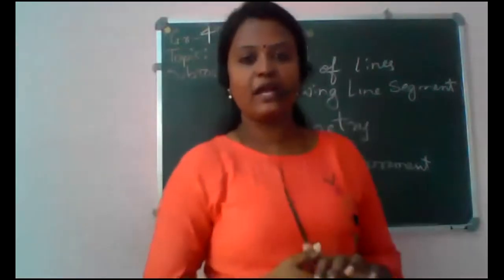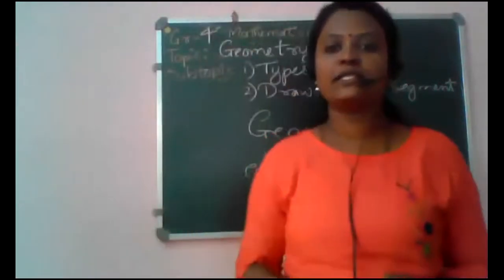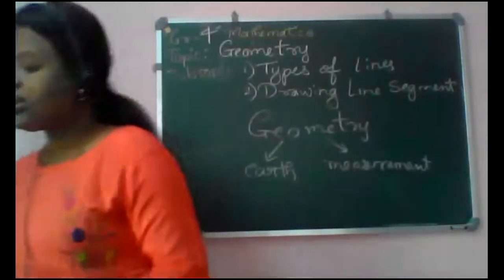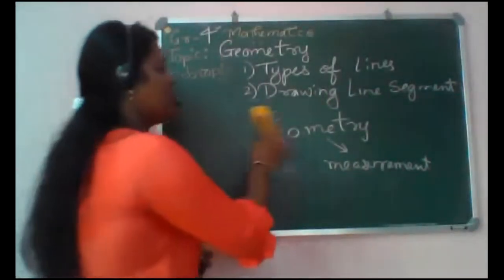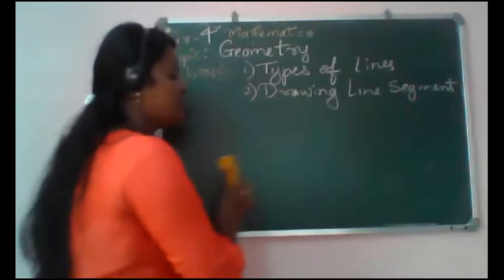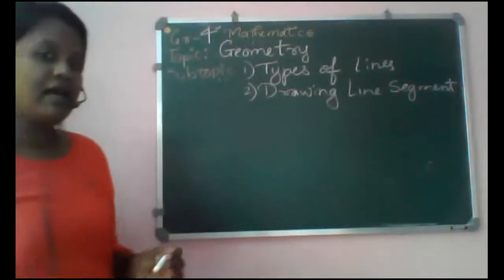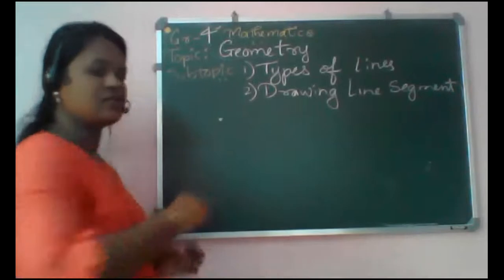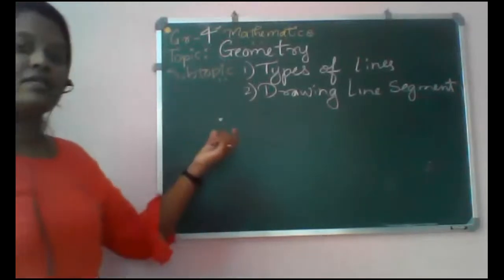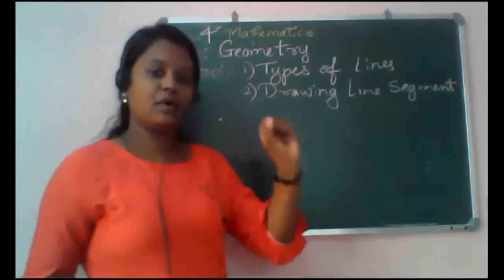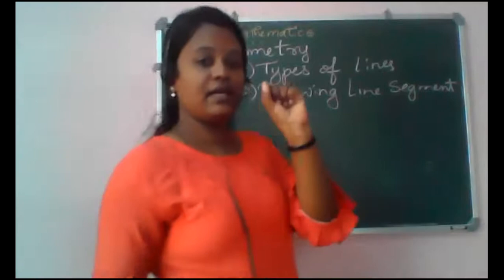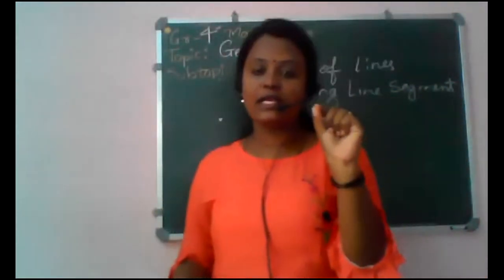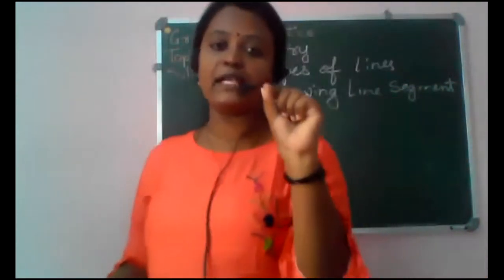In the first part, we shall know what are the basic components in Geometry. The basic components in Geometry are: first, if we draw a small dot-like structure — like the tip of a pin — it is called a point.